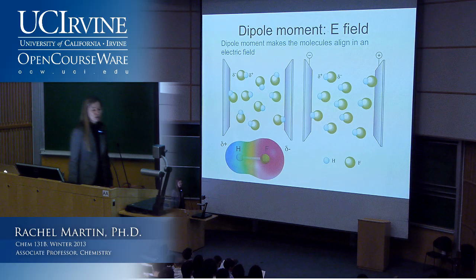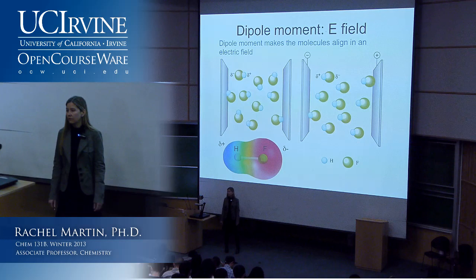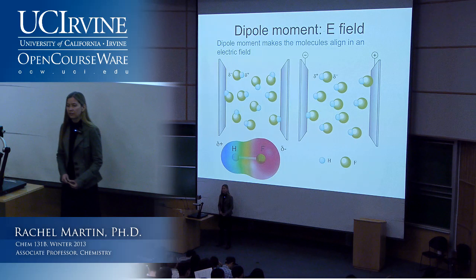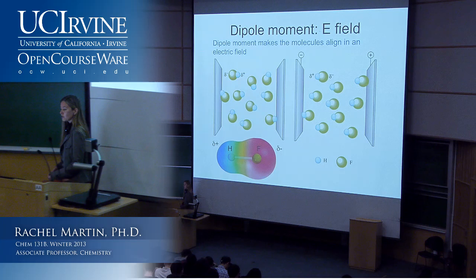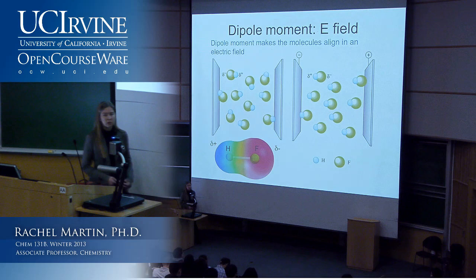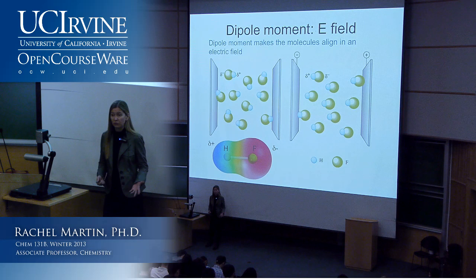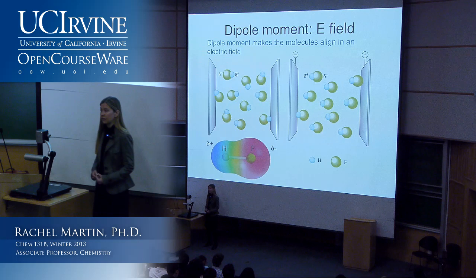We are going to start with our review of general chemistry. We're going back to the time in Chem 1A when we talked about molecular geometries and what different shapes molecules are and the consequences this has. We're going to learn some more quantitative ways to describe that. One of the first things we learn about molecular shapes is that if you have polar covalent bonds, depending on the geometry of the molecule, this could make your molecule have a dipole moment—an unequal distribution of electron density.